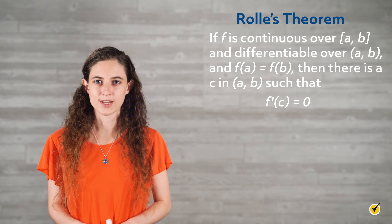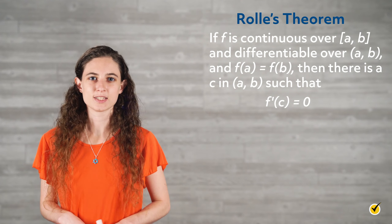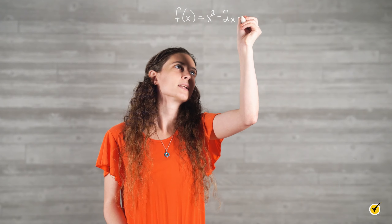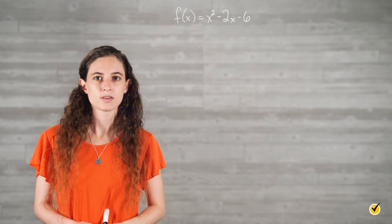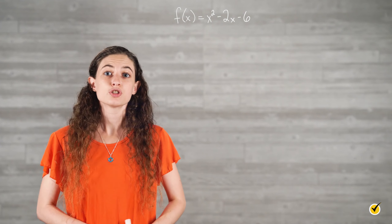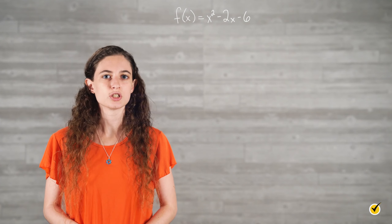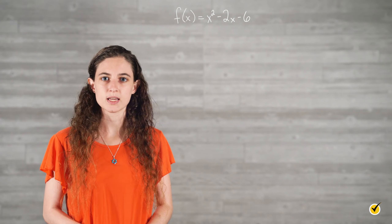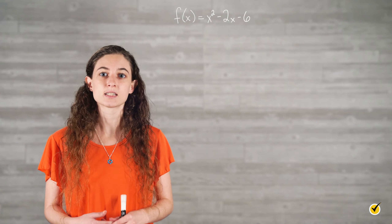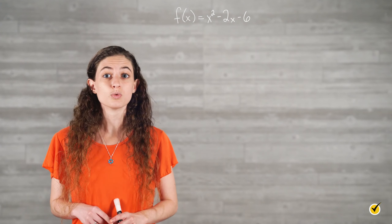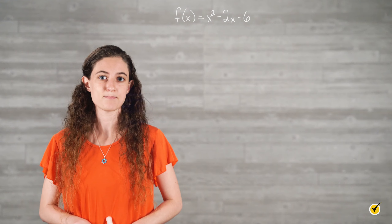Here's what these theorems often look like in practice. Let's take a look at this function: f equals x squared minus 2x minus 6. First note that since f is a polynomial function, it satisfies the conditions of continuity and differentiability in both theorems, since it is continuous and differentiable everywhere. There are times where functions will not satisfy these conditions, so be sure to verify them.